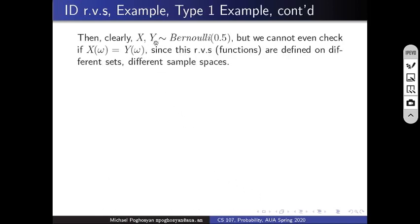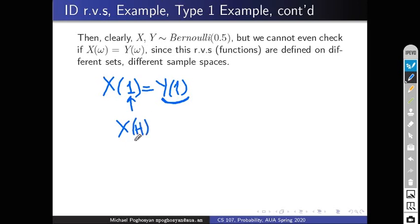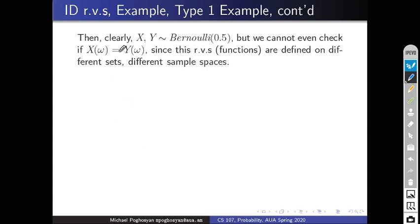So X and Y are both Bernoulli(0.5), but we cannot even check whether X(omega) = Y(omega), since they are defined on very different sample spaces. For instance, Y(1) is defined but X(1) is not — X is only defined on {heads, tails}. So even though X and Y are defined on different sample spaces, they have the same distribution.